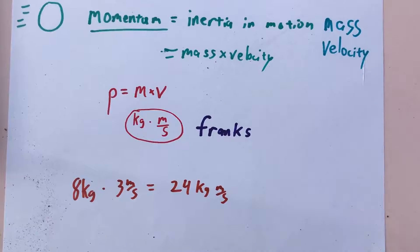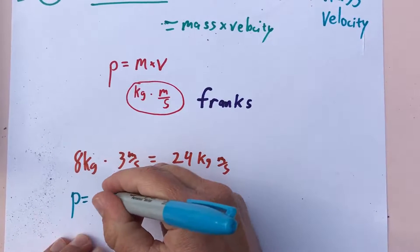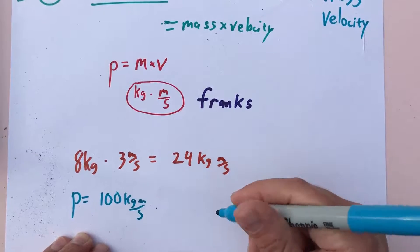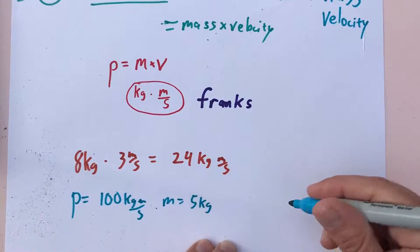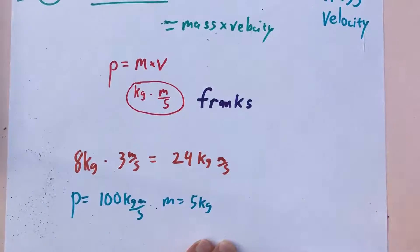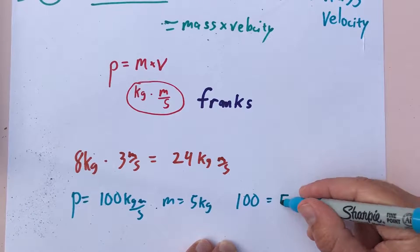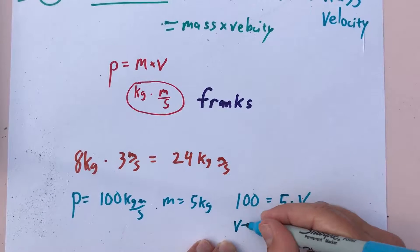Maybe if you wanted to make it a little bit harder, you could give the momentum and ask to find one of the others. Like for example, if you said that the momentum was 100 kilogram meters per second and that the mass of it was five kilograms, then you would just set it up: momentum equals mass times velocity. So 100 equals the mass five times velocity. When you solve for velocity it'd be 20 meters per second.